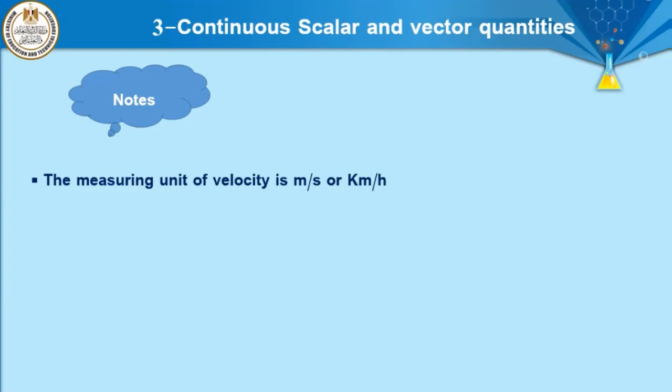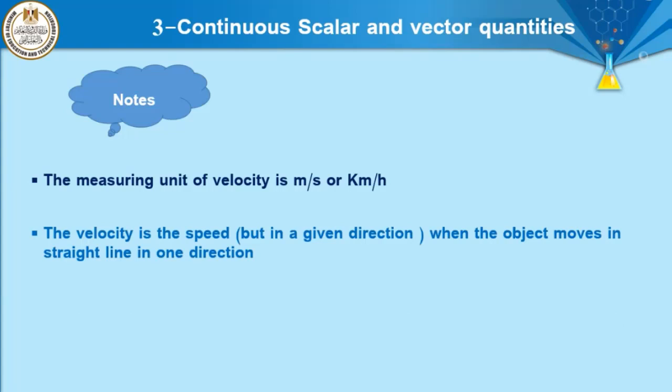Note: the measuring unit of velocity is meter per second or kilometer per hour. Velocity is speed but in a specific direction. Velocity becomes equal to speed when the object moves in a straight line, because in that case distance equals displacement. When the object moves in a straight line, distance equals displacement and speed equals velocity.